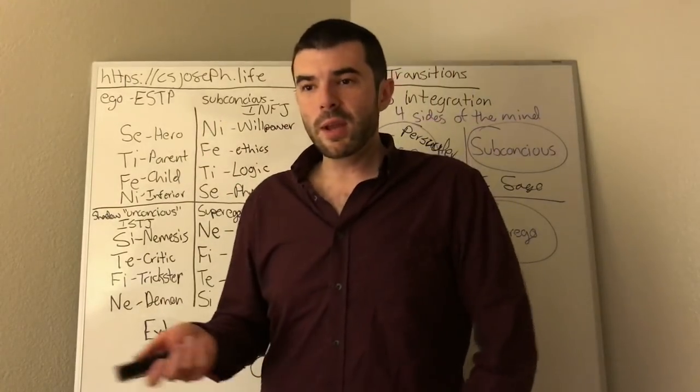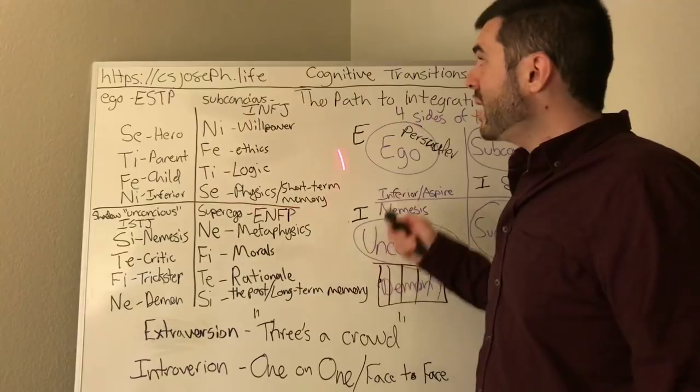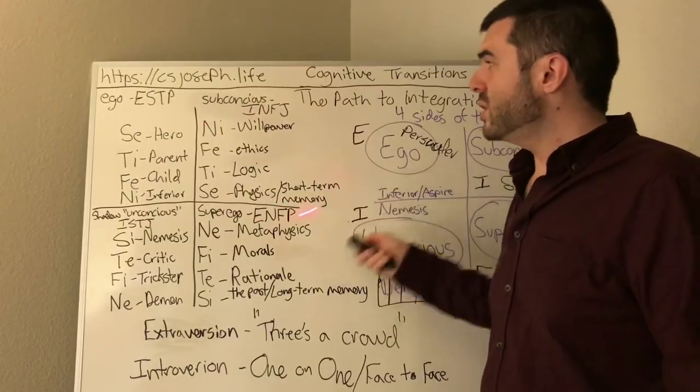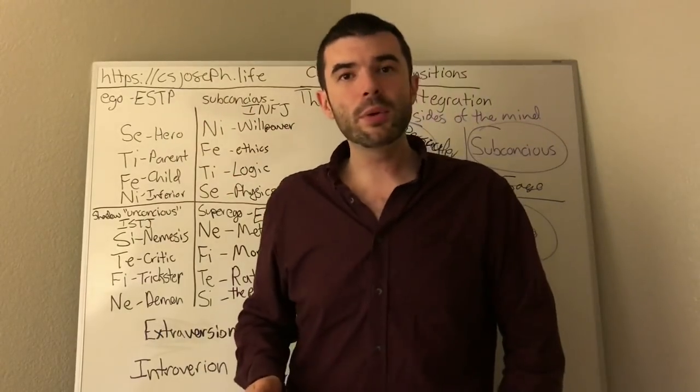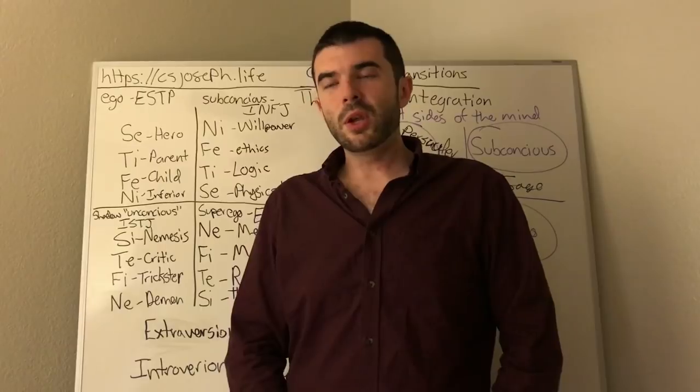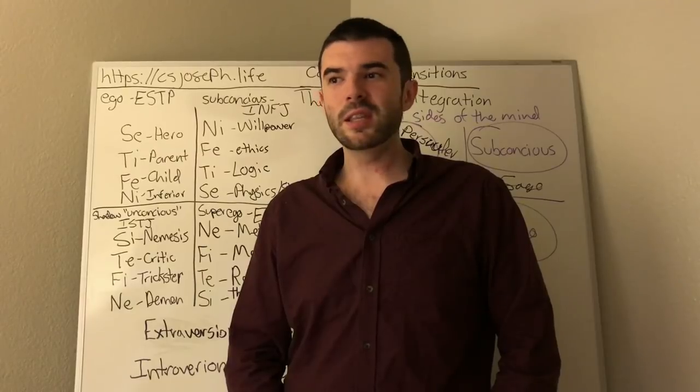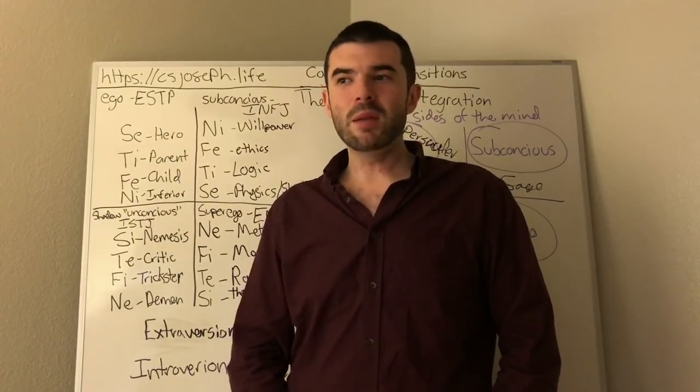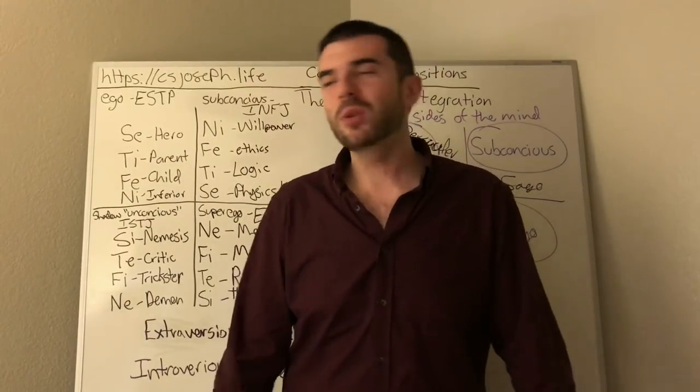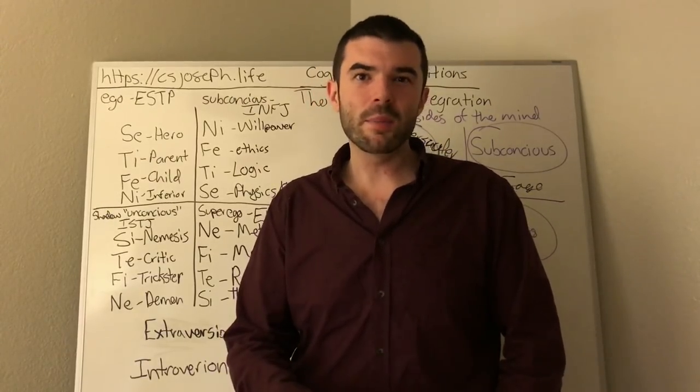When an ESTP is insecure and they go in their subconscious, that INFJ, just like regular INFJs, have the potential of alienating people with their Fi critic. That ESTP is using the INFJ subconscious and through their insecurity, they will start to alienate other people that they are trying to improve.